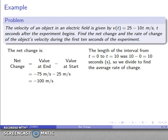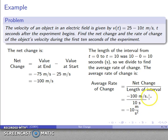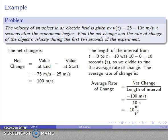I divide the net change by the length of the interval — that's negative 100 meters per second divided by 10 seconds. Numerically that's negative 100 over 10 = negative 10. For the units, I simplify the compound fraction by multiplying numerator and denominator by seconds: that eliminates the seconds in the numerator and puts another factor of seconds in the denominator. So the units become meters over seconds squared. The average rate of change is negative 10 meters per second squared.